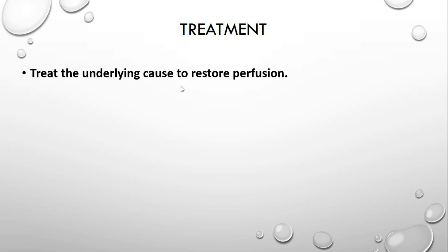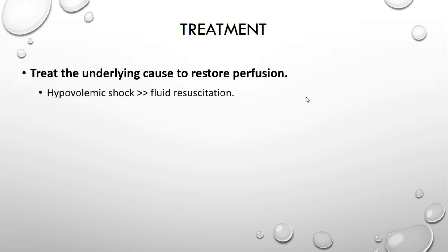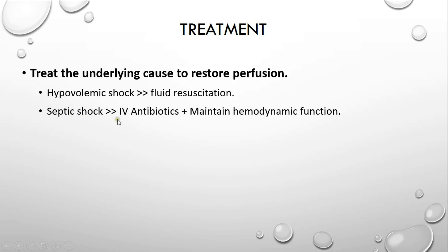Regarding treatment, the most important thing is to treat the underlying cause to restore tissue perfusion. For hypovolemic shock, the most important next step is fluid resuscitation. For septic shock, the best next step is to give IV broad-spectrum antibiotics after obtaining a blood specimen for blood culture, as antibiotics could compromise culture results. It is also important to maintain hemodynamic function using fluid resuscitation and IV vasopressors and inotropes if required.